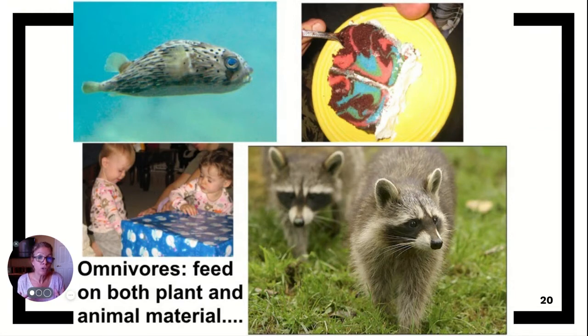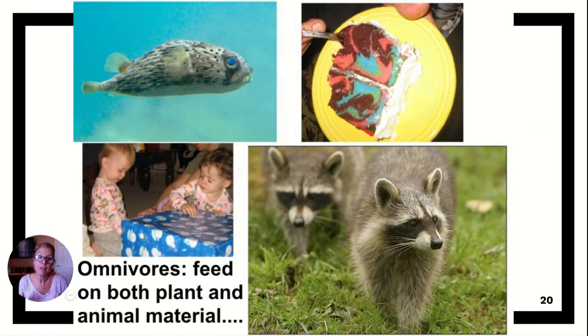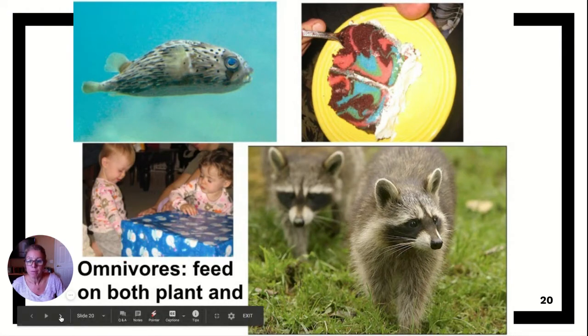If you were biologically a vegetarian, your intestines would have to be a lot longer to accommodate that. We have an intermediate length, which means we are omnivores. What you choose to eat is up to you. By the way, I made that cake right there — I don't really like it — and those two little girls are my nieces, but they're older now.